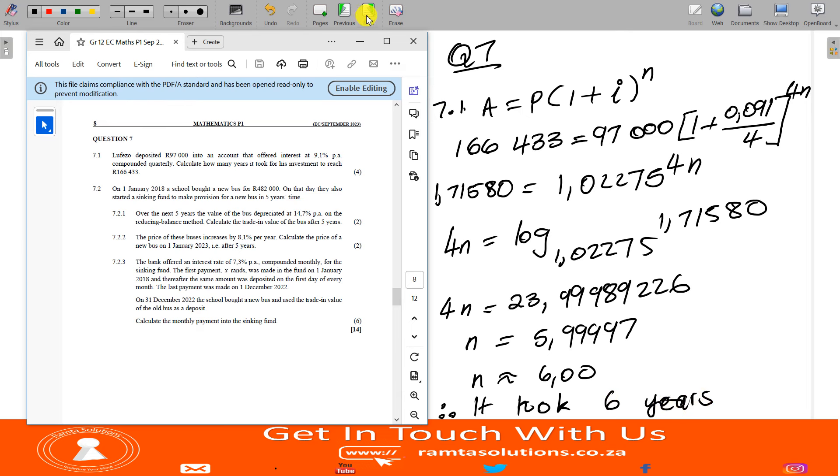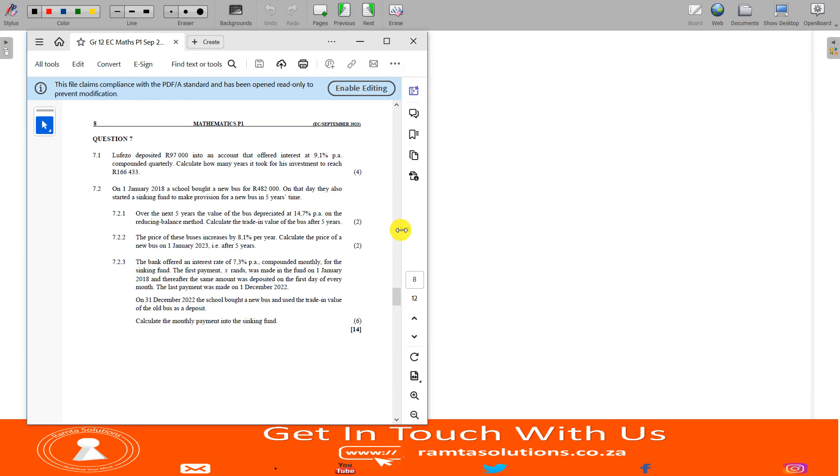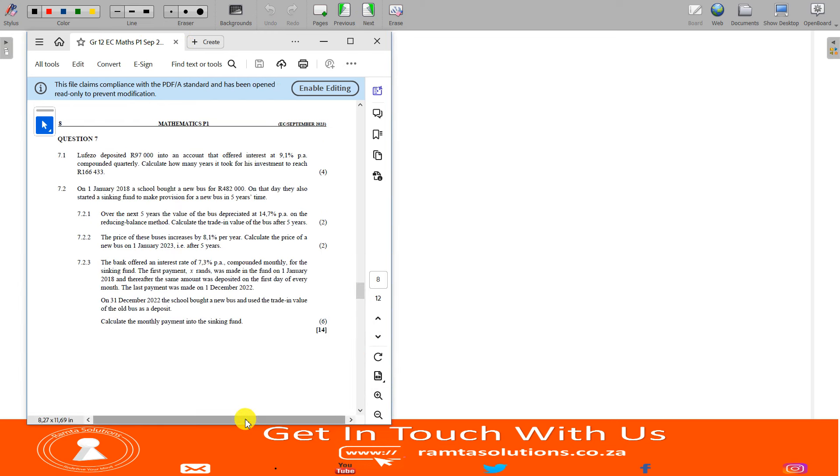Going to the next page. Remember guys, if you are using a mobile device, please rotate your screen. 7.2 says on 1 January 2018, a school bought a new bus for 482,000. On that day they also started a sinking fund to make provision for a new bus in 5 years. 7.2.1, over the next 5 years the value of the bus depreciated at 14.7% per annum on the reducing balance method. Calculate the trading value of the bus after 5 years.